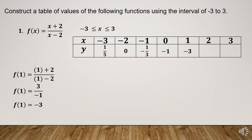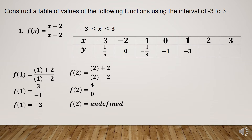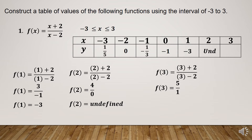If x is equal to 2, substitute and simplify. You have observed that f of 2 is undefined, because any number divided by 0 is undefined. So we can also write it as 'und', meaning the value of y is undefined when x is equal to 2. If x is equal to 3, substitute and simplify: f of 3 is equal to 5.